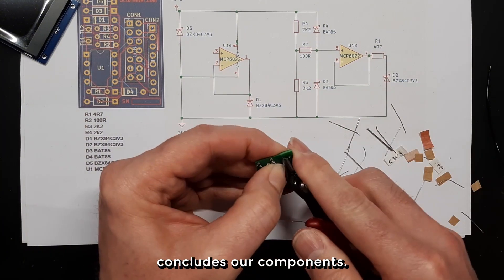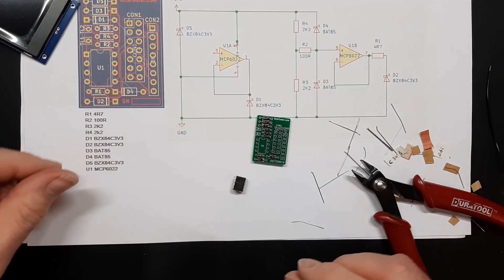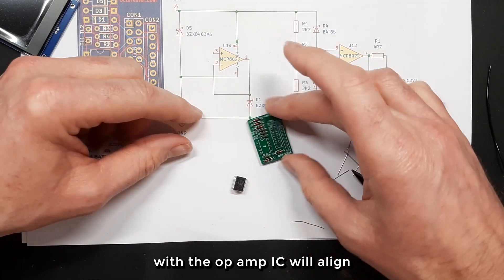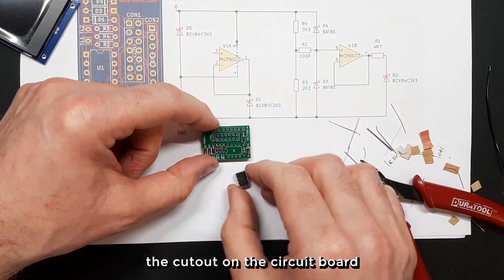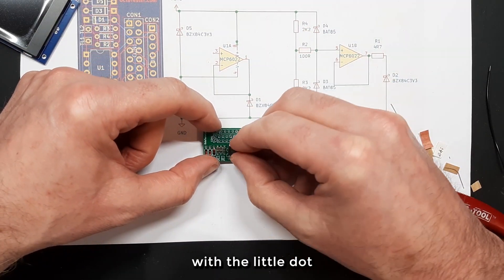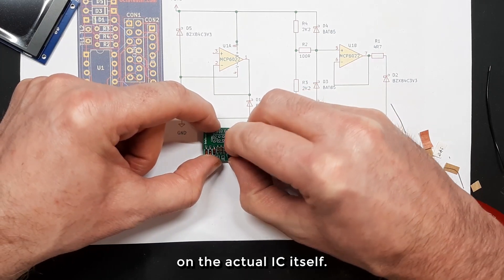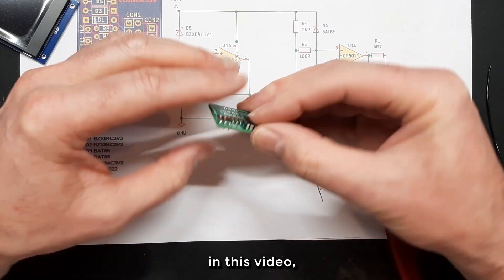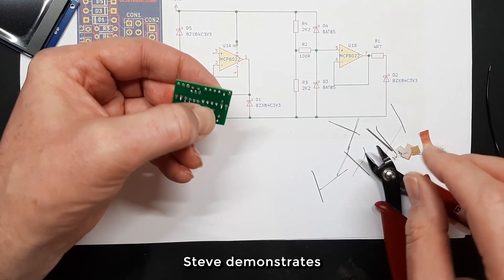And that concludes our components. With the op-amp IC, we'll align the cutout on the circuit board with the little dot on the actual IC itself. As you can see in this video, Steve demonstrates it perfectly.